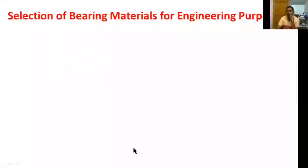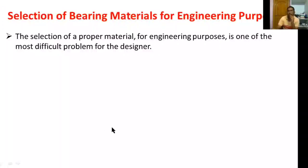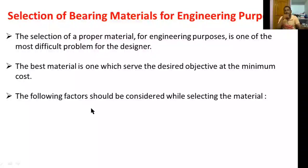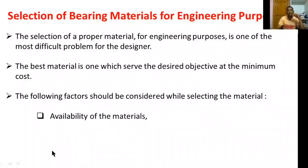Selection of bearing materials for engineering purposes. The selection of a proper material for engineering purposes is one of the most difficult problems for a designer. The best material is one which serves the desired objective at minimum cost, and the following factors should be considered while selecting the bearing material.